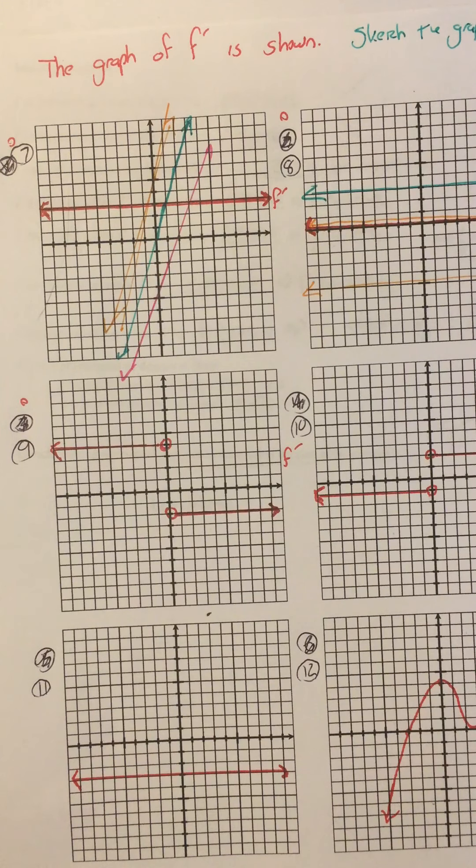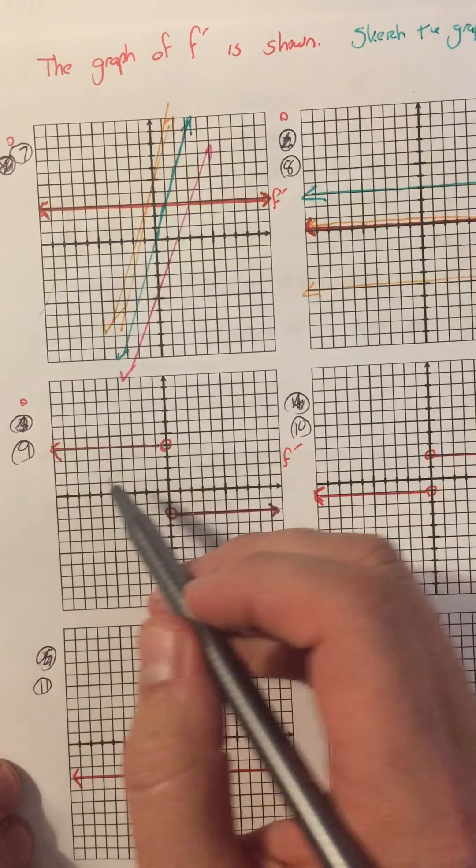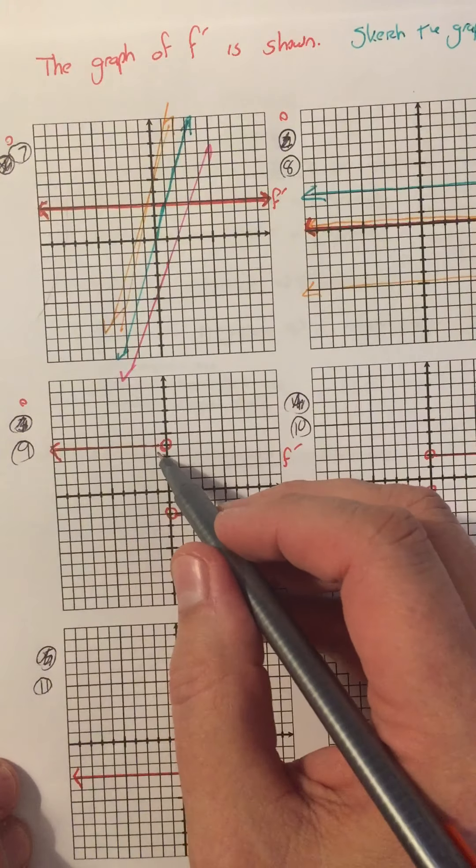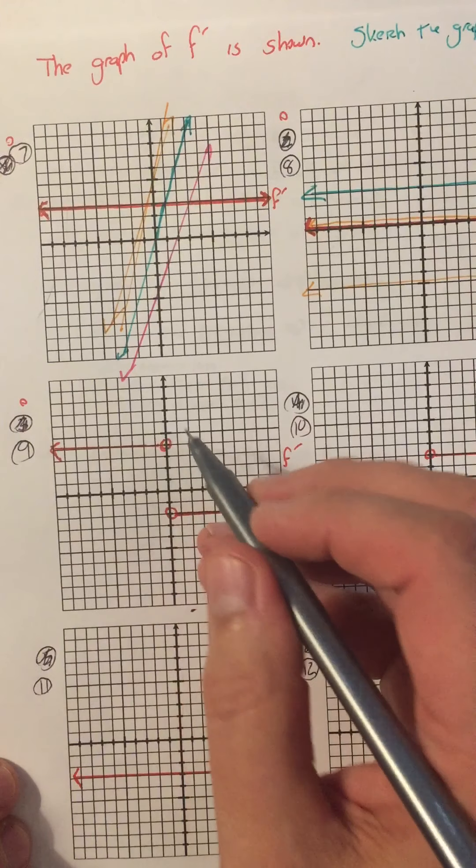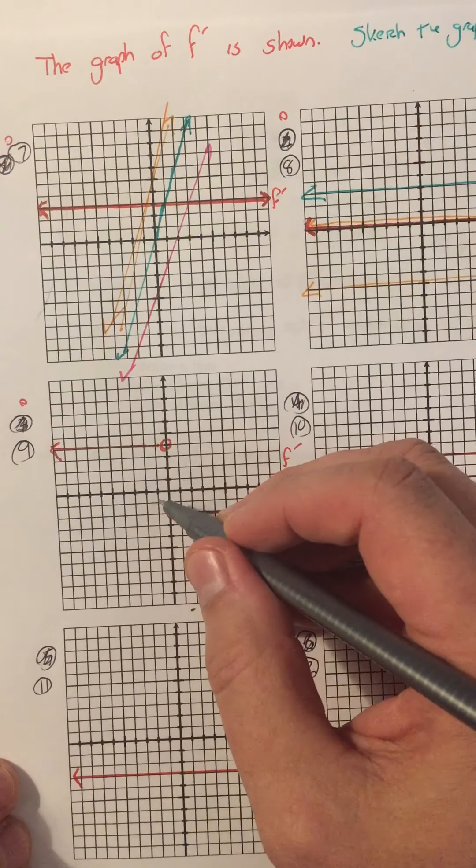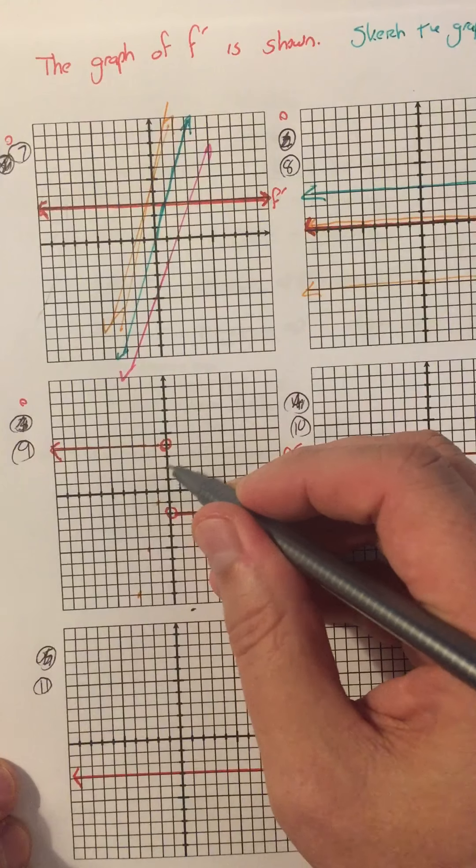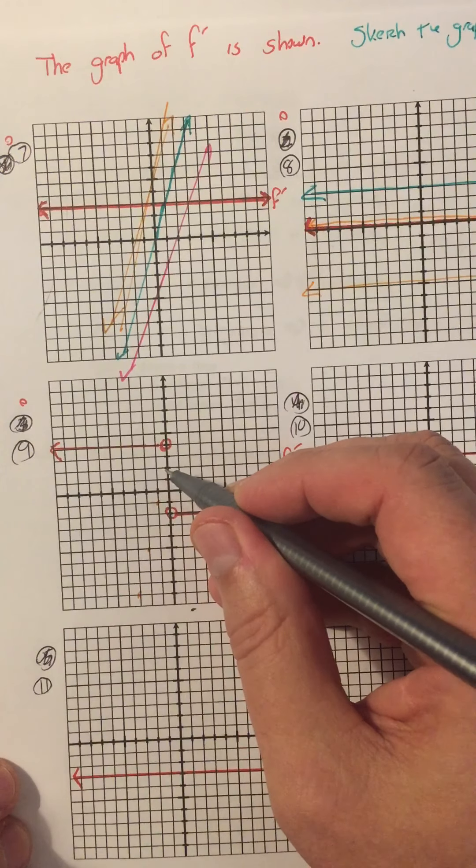Alright, so number 9. First of all, a popular way for people to draw this is, we know that on this side of 0 the function is increasing and has a slope of 1, 2, 3, 4. So I have a function that is increasing with a slope of 4 to the left of 0, so I have something that goes like that.